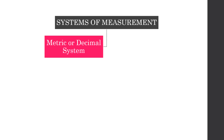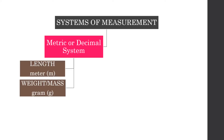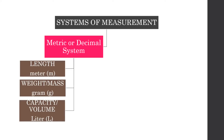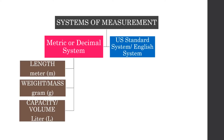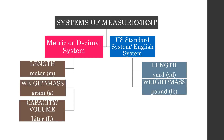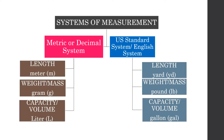We have two systems of measurement. The first is the metric or decimal system. For length, our base unit is meter. For weight or mass, it is gram. For capacity or volume, our base unit is liter. The other system is the U.S. standard or English system. For length, it is yard (YD). For weight or mass, it is pound (LB). For capacity or volume, the base unit is gallon (gal).